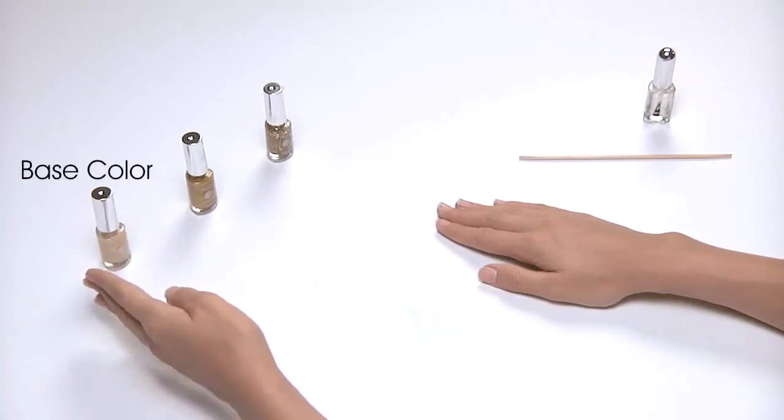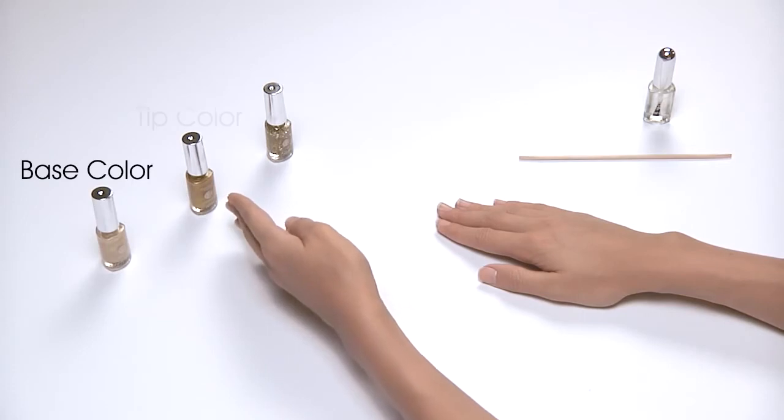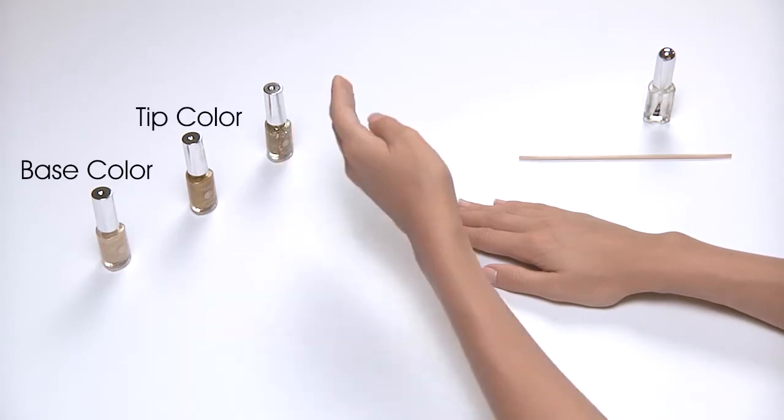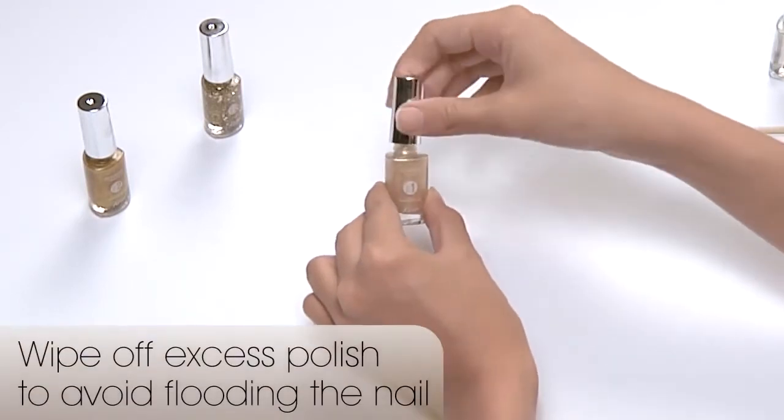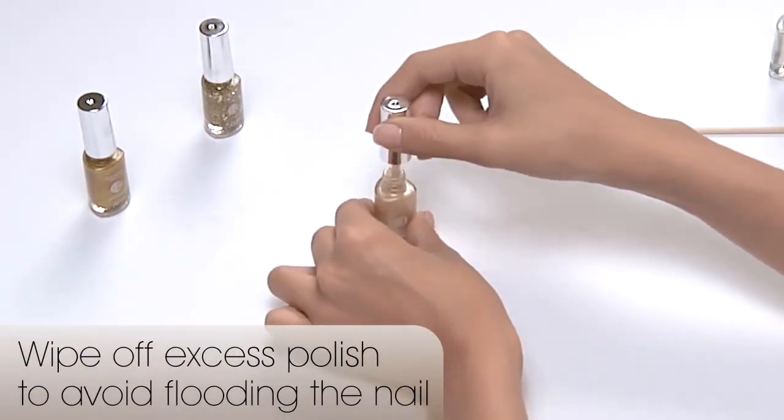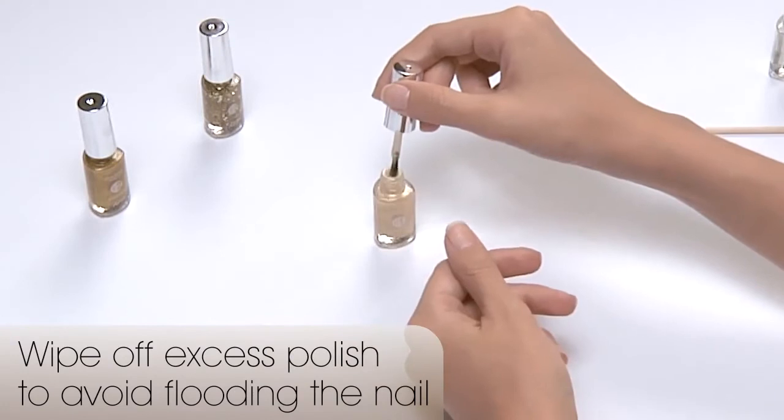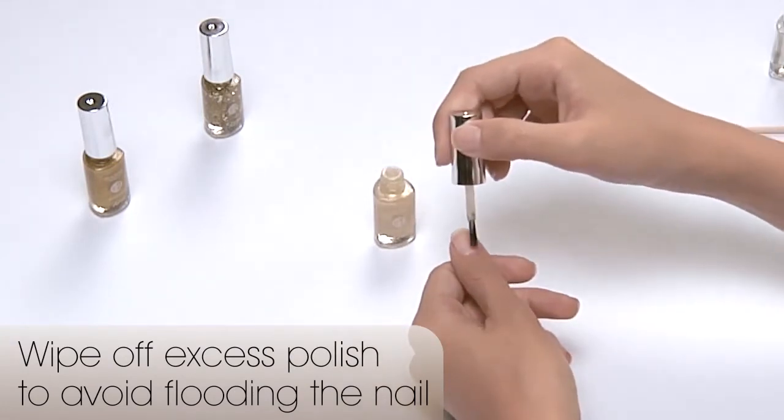Step 1, base color. Step 2, tip color. Step 3, blend color. Quick tip: wipe off excess polish from brush using the side of the bottleneck to avoid flooding the nail with too much polish.